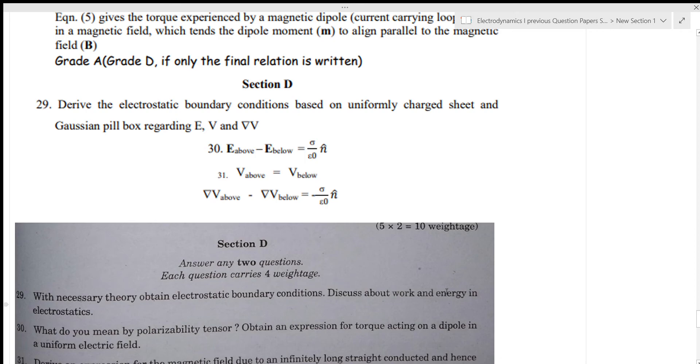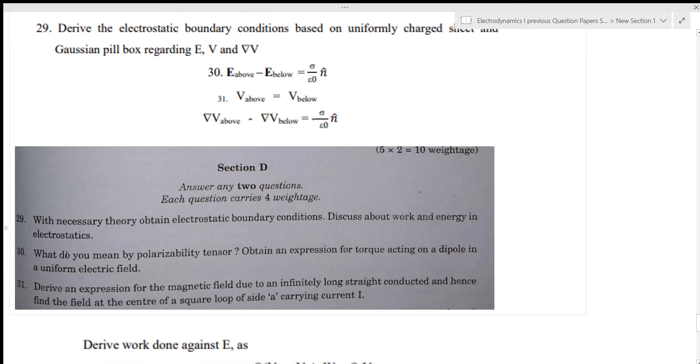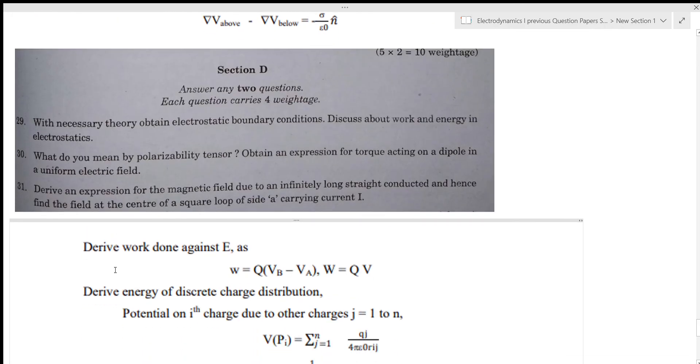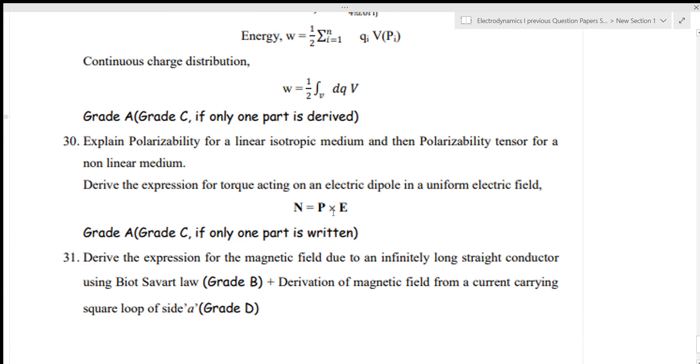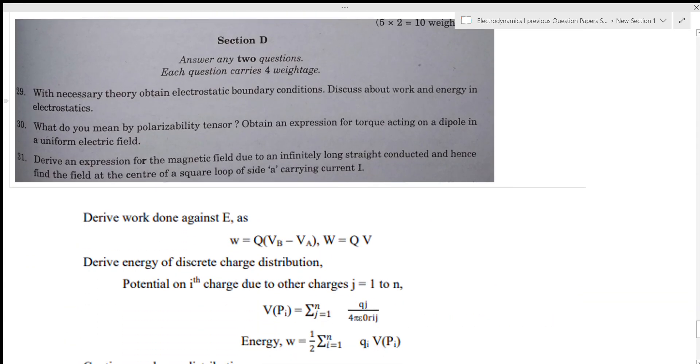What do you mean by polarizability tensor? Obtain an expression for torque acting on a dipole in uniform magnetic field. You can use the torque equation n equal to p cross E. You can use the text to apply and separate the question into parts.